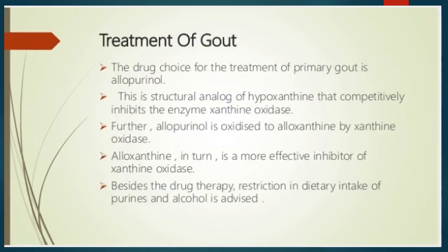The drug of choice for the treatment of primary gout is allopurinol, which is a structural analog of hypoxanthine that competitively inhibits the enzyme xanthine oxidase. Allopurinol is a more effective inhibitor of xanthine oxidase and is itself oxidized to alloxanthine by xanthine oxidase. Besides drug therapy, restriction of dietary purines and alcohol is also advised.